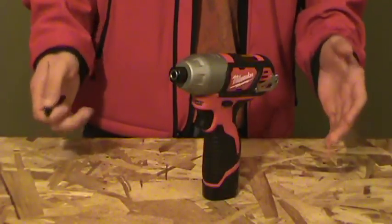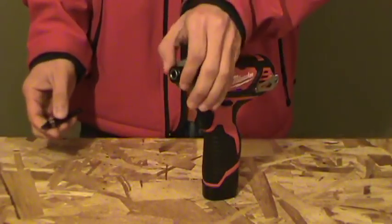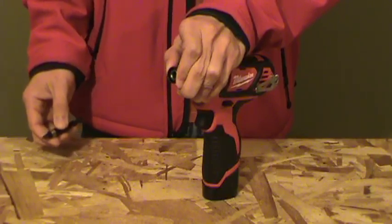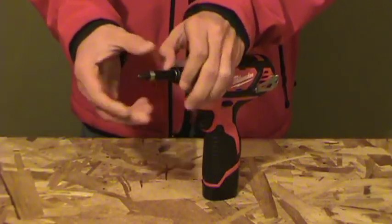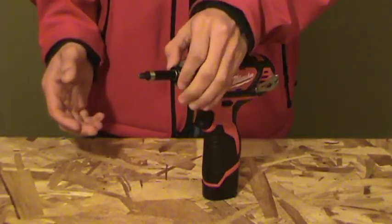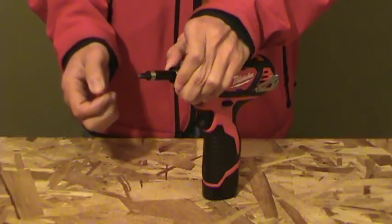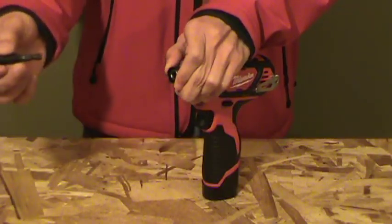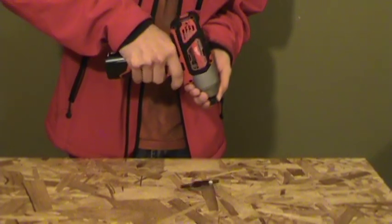In order to insert bits you need both hands to install a bit. One hand to pull on the chuck and the other hand to install the bit. To remove bits pull on the chuck with one hand and you can either pull out the bit with your other hand or let gravity drop the bit.